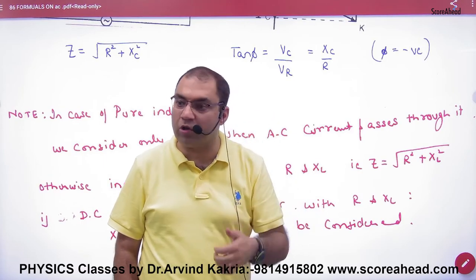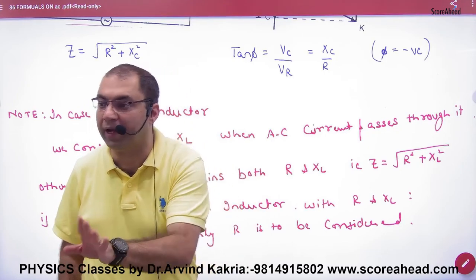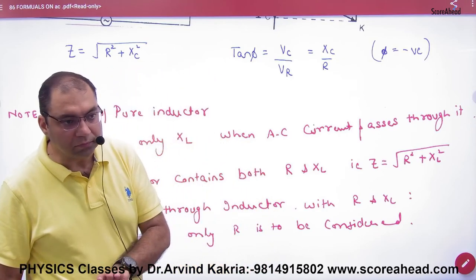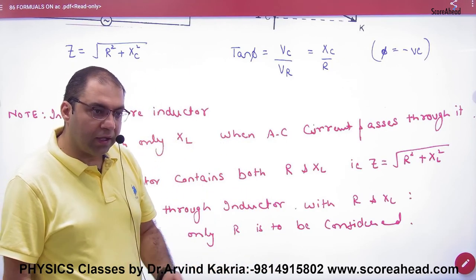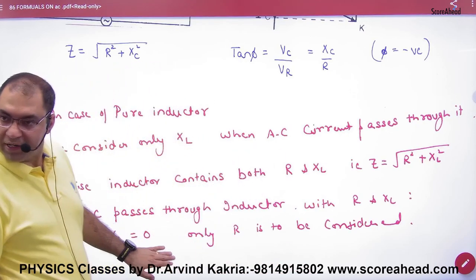Then in the last chapter, when we used solenoid and DC used, we had talked about R but we had never talked about XL. Because what happens for XL in DC? Zero. But because this chapter is AC, there will be R and XL and pure inductor. Is this point clear here?